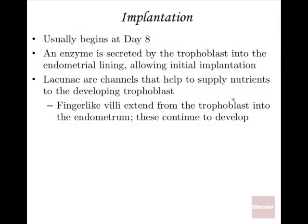Implantation: the blastocyst implants itself in the endometrium of the uterus, usually beginning around day eight. An enzyme is secreted by the trophoblast into the endometrial lining, allowing the initial implantation. Lacunae — little holes or channels — help supply nutrients to the developing trophoblast from the blood supply of the endometrium.